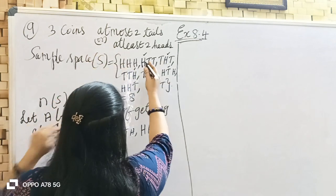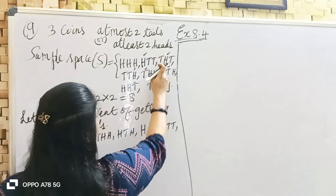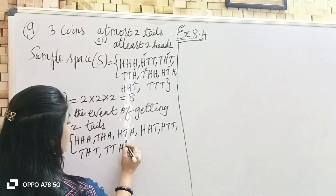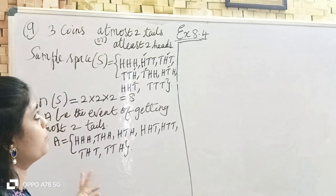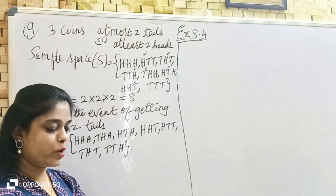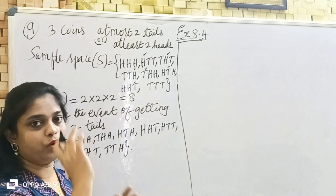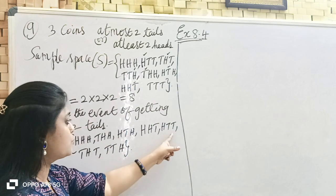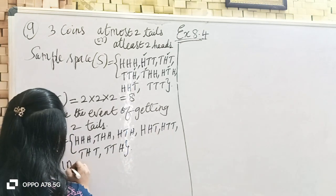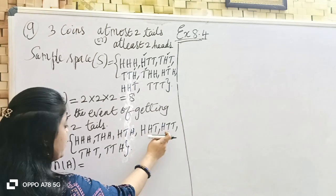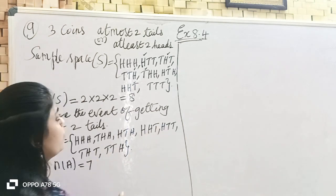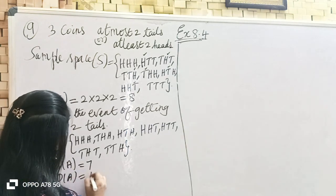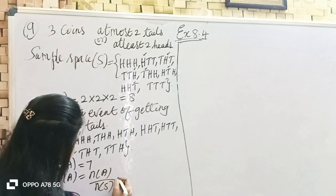Three tails and two tails. TH outcomes. So at most check — maximum two. One means one tail, two means two tails.